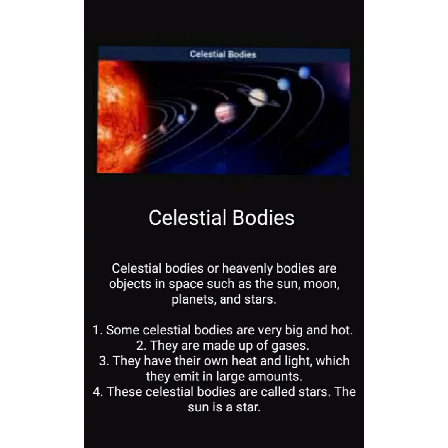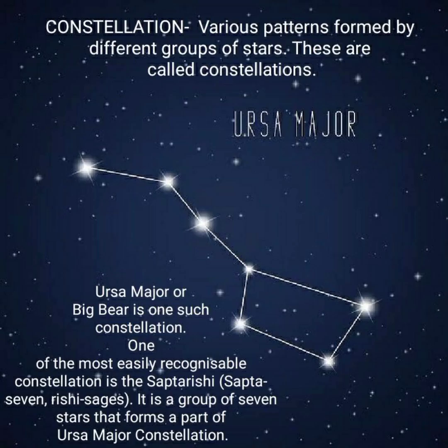The characteristics of stars as celestial bodies are: they are very big and hot, they are made up of gases, and they have their own heat and light which they emit in a very large amount. The Sun is also a star. Now we will go to constellations. Various patterns formed by different groups of stars are called constellations.